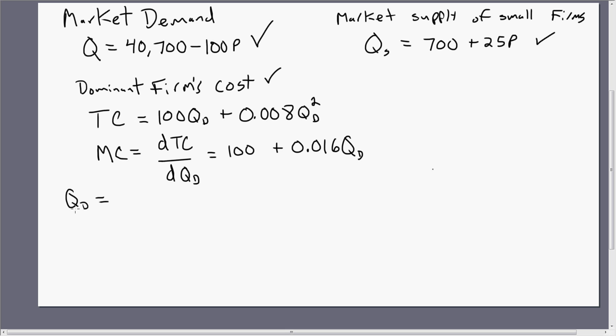The dominant firm's demand equation, Q subscript D, is simply calculated by taking the market demand and subtracting from it the supply curve of smaller firms. The idea behind this is that when the dominant firm is setting its price and output to maximize profits, it wants to know how the smaller firms are going to respond. So we do that by calculating this dominant firm's demand equation, taking into account the behavior of the smaller firms.